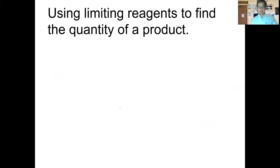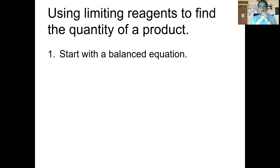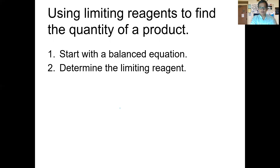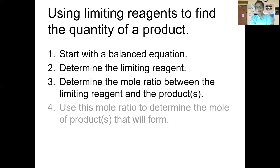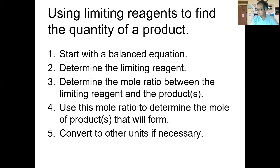That's it for finding the limiting reagent. The homework will give you more opportunity to practice. But once you have the limiting reagent, you don't stop there — we want to be able to predict how much product is going to form. Once we have the limiting reagent, we use that amount to calculate the product. The process is: start with a balanced equation, determine the limiting reagent, then use the limiting reagent to find out how much product forms — in grams, liters, or moles.